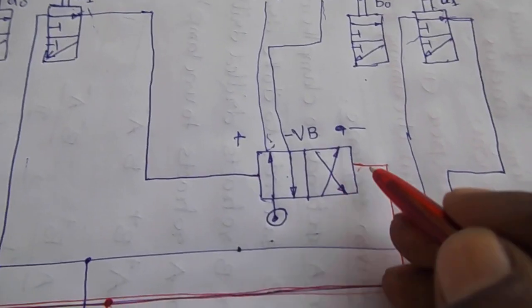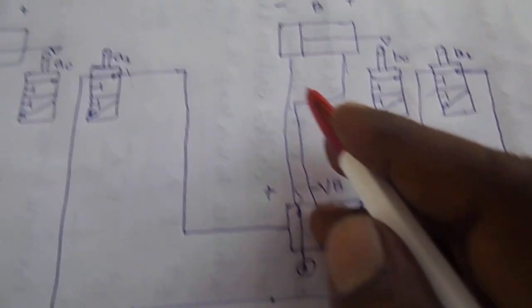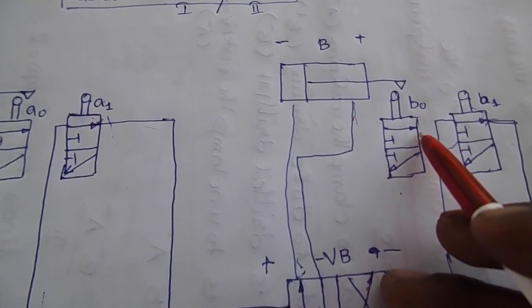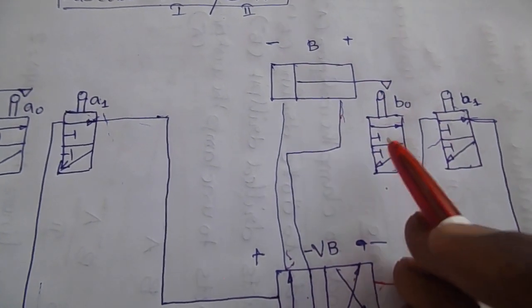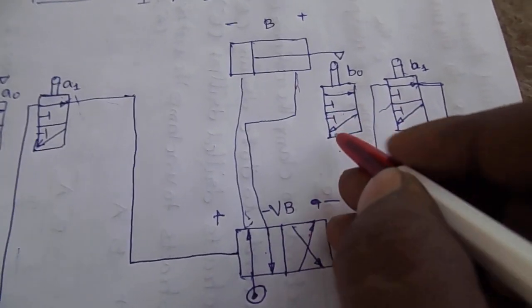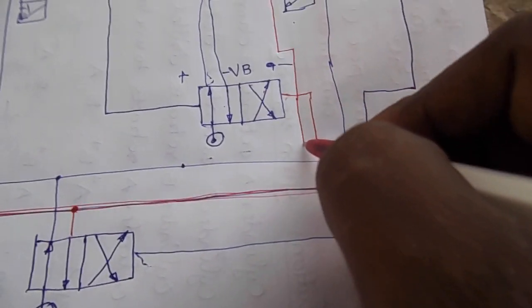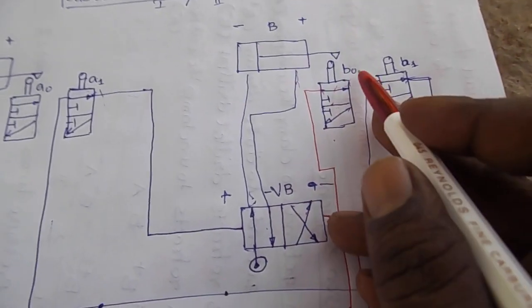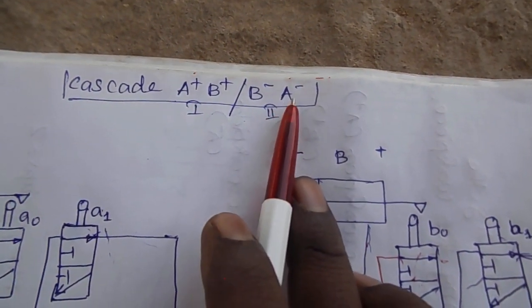First, this cylinder will retract to the cylinder position. So if the pressure line is here, we will retract the pressure. Then B minus activates. So B minus is here. The B cylinder will retract. The limit is here. We will get this line — the pressure line is falling down here, then we use A minus.